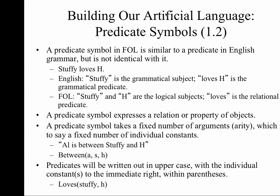So the sentence 'Al is between Stuffy and H' becomes: Between, open parenthesis, a, comma, s, comma, h. In our version of the system we will always write out the name in full — I just used A, S, and H because I'm toggling between the single letters available in Tarski's World. There are six of them in total, and those letters are the individual constants allowed in that program. It's also the case that there are other times when we write out names in full, such as 'stuffy' or 'Stuart'.